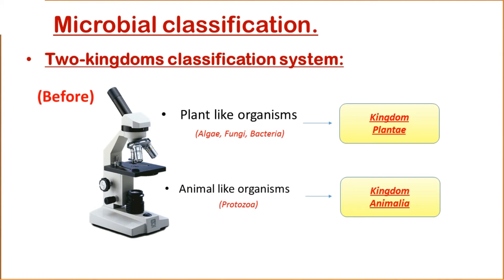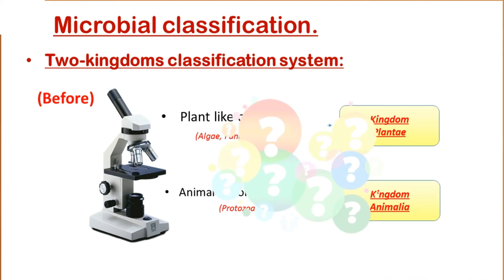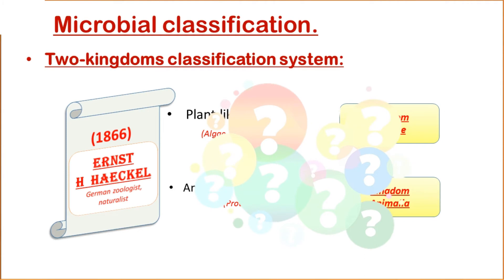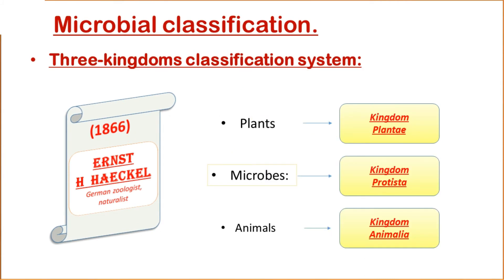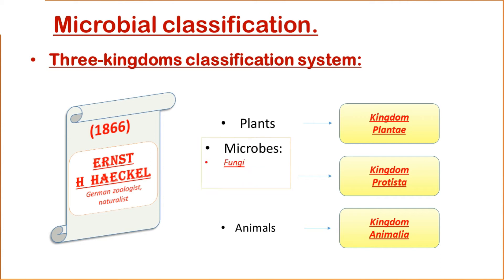Classification of microbes remained somewhat chaotic until 1866, when the German naturalist Ernst H. Haeckel came up with a new system. He coined the term 'protists' for microbes, and placed all fungi, protozoa, slime molds, single-celled algae, and bacteria into a new kingdom: Kingdom Protista.